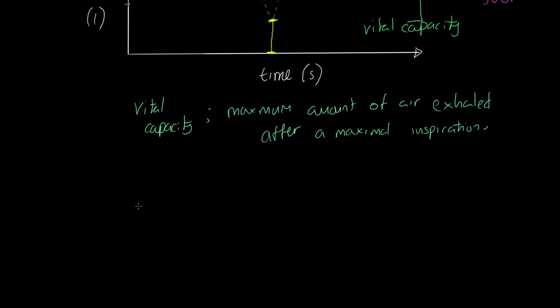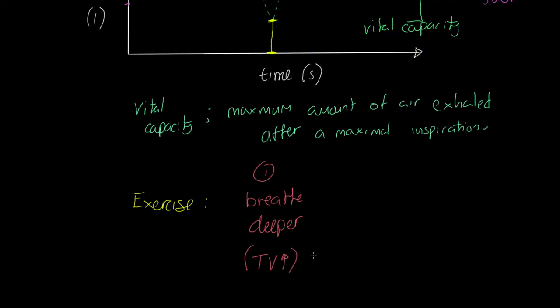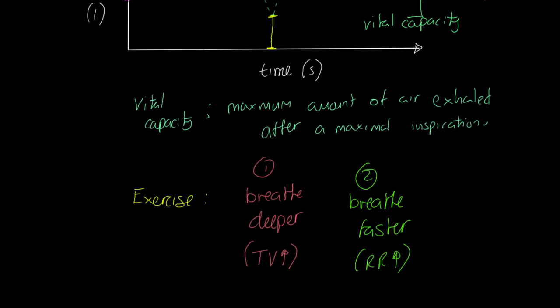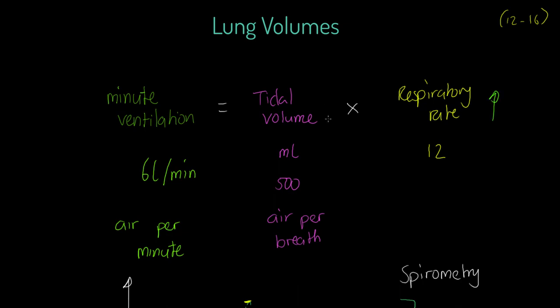Remember that if we were to start to exercise, two things would happen. Number one: we would breathe deeper — and believe me, that happens before faster, so go notice it next time. What that means in effect is that tidal volume goes up. But also, of course, what happens second is we breathe faster — our respiratory rate goes up. And because of that, going back to our original formula, if both tidal volume and respiratory rate go up, by definition the amount of air per minute — our minute ventilation — goes up significantly during exercise. That's the key takeaway.